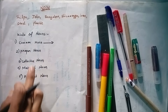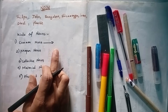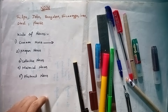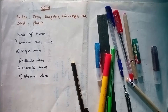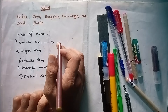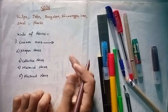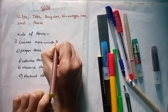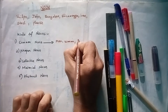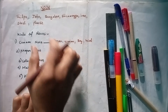Common noun means a word used in common, or it is a name given in common to every person or thing of the same class or kind. For example, if someone in a home is called by a common name like John — words like man, woman, boy, girl are common nouns.